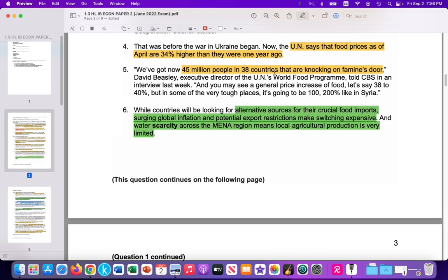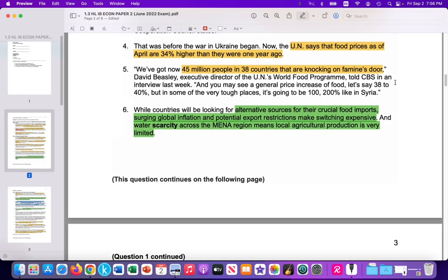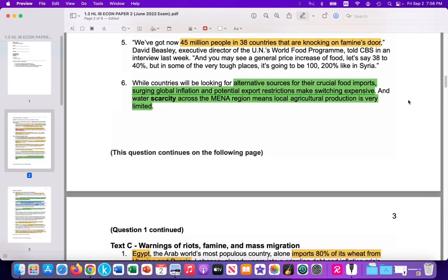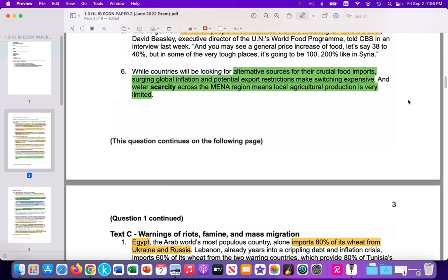In addition, the UN says that food prices as of April are 34% higher than they were a year ago. 45 million people in 38 countries are now facing potential famine due to the rising prices and the reduced purchasing power of their low and likely fixed types of income.